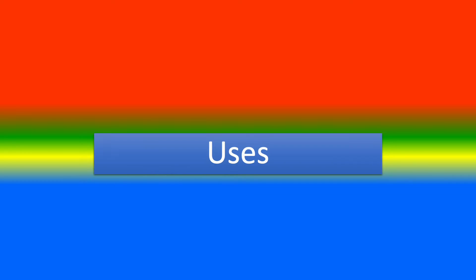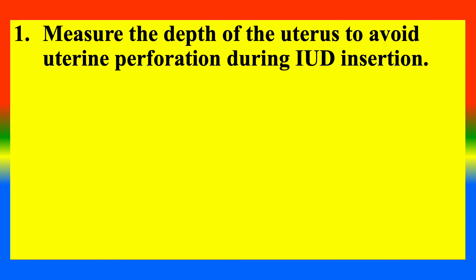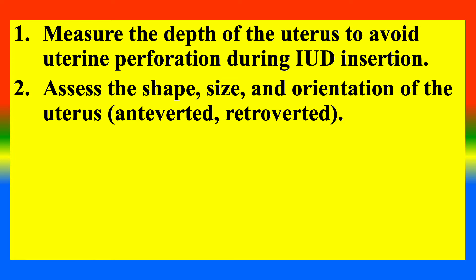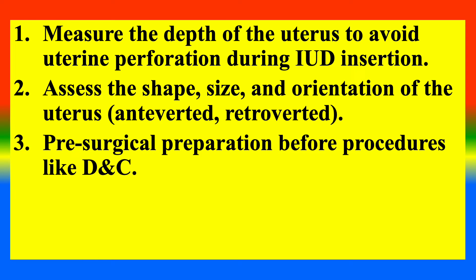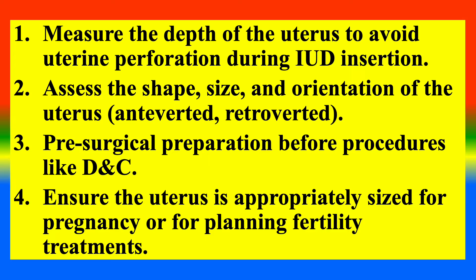The uses of the uterine sound include: first, to measure the depth of the uterus and avoid uterine perforation during IUD insertion; second, to assess the shape, size, and orientation of the uterus; third, pre-surgical preparation before procedures like D&C; and fourth, to ensure the uterus is appropriately sized for pregnancy or for planning fertility treatments.